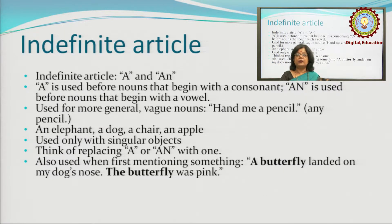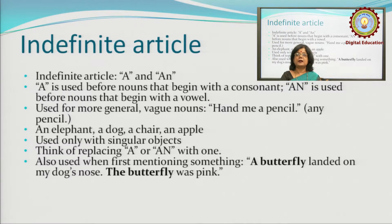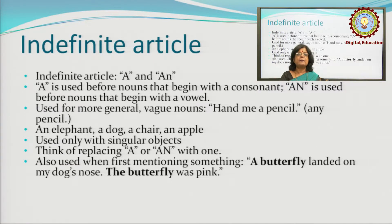Now let us switch over to indefinite articles. The two aspects left under the category of indefinite articles are 'a' and 'an.' 'A' is used before nouns that begin with a consonant. 'An' is used before nouns that begin with a vowel. Indefinite articles are used for more general, vague nouns — like 'hand me a pencil,' where any pencil will do. An elephant, a dog, a chair, an apple — these are used only with singular objects.